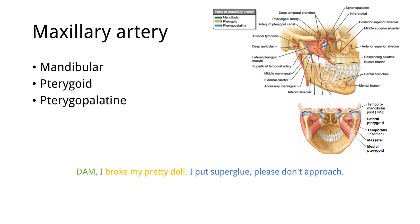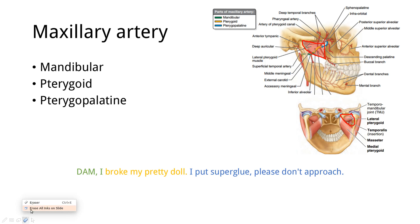It has three parts depending on the relation with the lateral pterygoid muscle. The parts are the mandibular, the pterygoid, and the pterygopalatine parts.